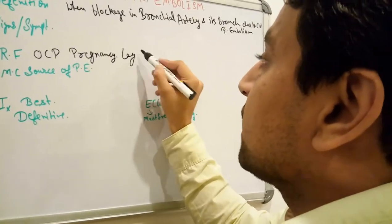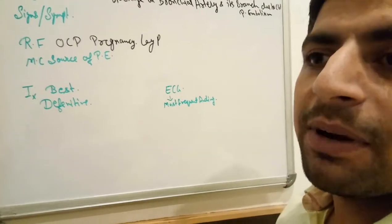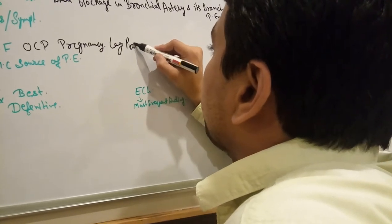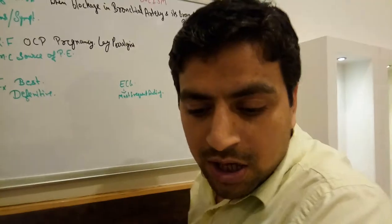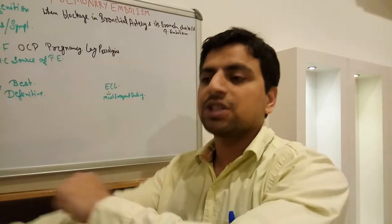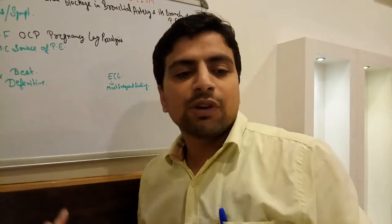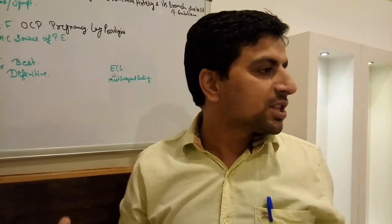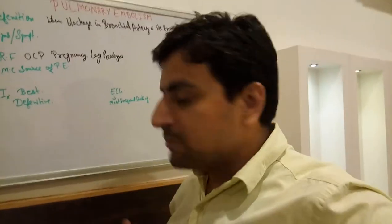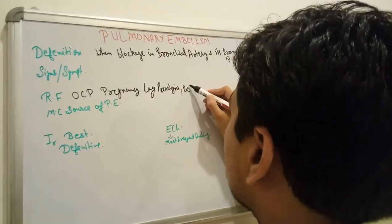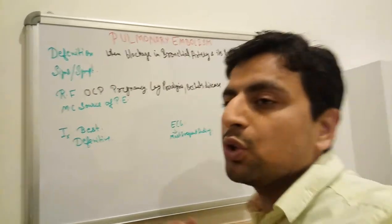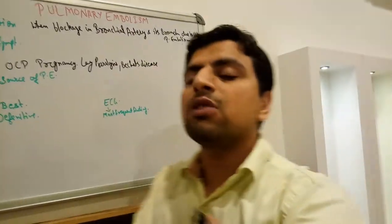Leg paralysis is a risk factor because there is no movement — the patient is always sitting. For uncomplicated cholecystectomy, there is no problem because after the surgery the patient can walk within 24 hours. Behçet's disease is also a risk factor. Behçet's disease is a small vessel vasculitis. I will explain vasculitis in more detail in my next coming videos.